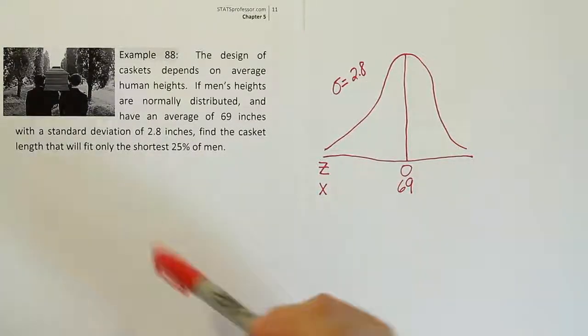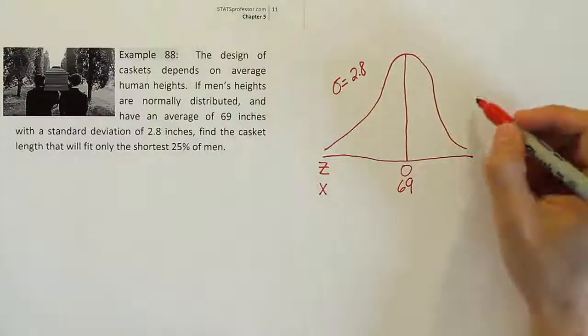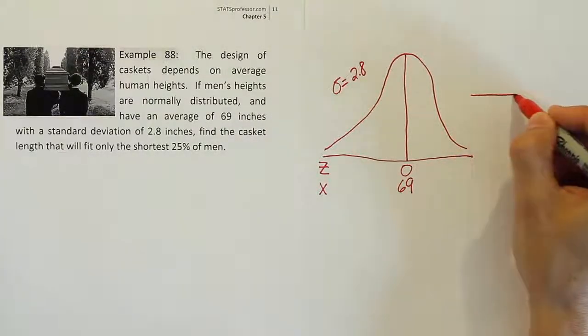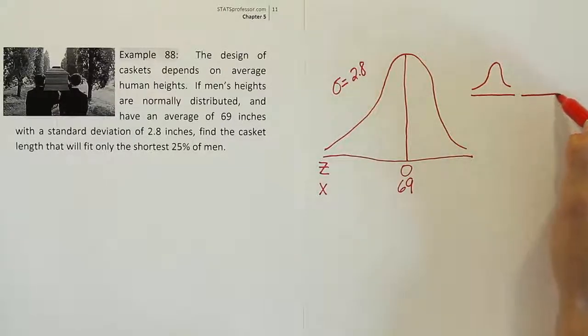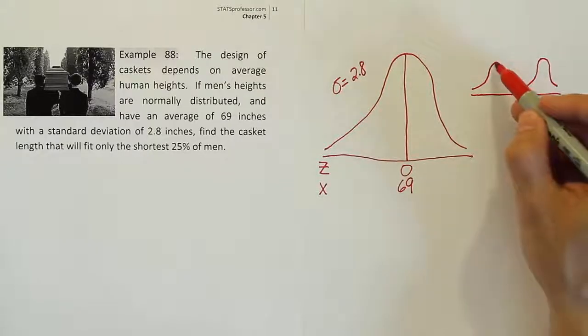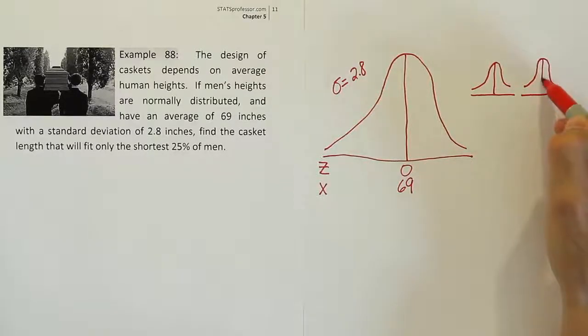And they want us to find the length that corresponds to the shortest 25% of men. So what I'd like you to do in the beginning here is to draw two little bell curves, just two little mini bell curves. It takes just a second to do this.